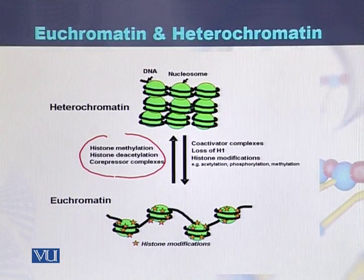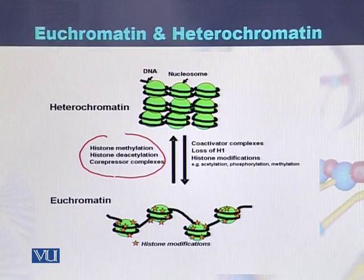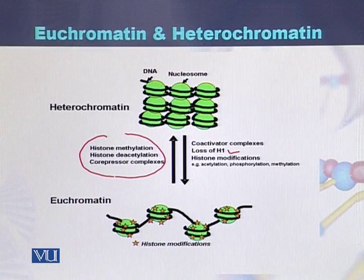These are the methods that can change U-chromatin into heterochromatin. Heterochromatin can also be changed into U-chromatin by different methods, such as loss of H1 protein, and histone modifications like acetylation, phosphorylation, as well as methylation. These are the methods by which heterochromatin can be changed into U-chromatin.